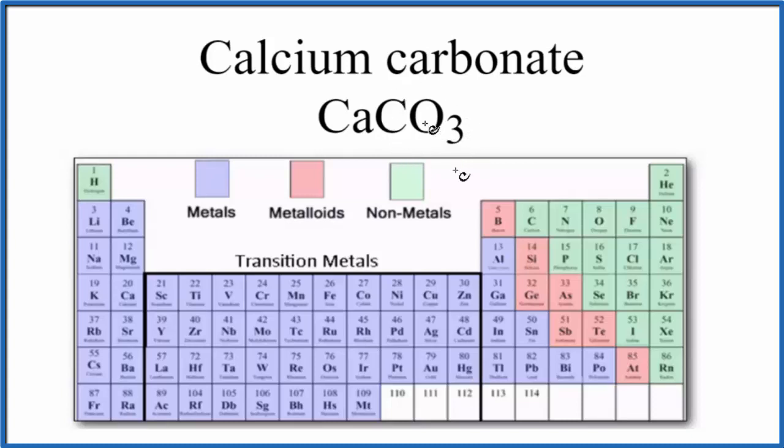When we look at the periodic table, we have calcium here. Calcium is a metal, and then carbon and oxygen are nonmetals. When we have metal plus nonmetals, that's an ionic compound.